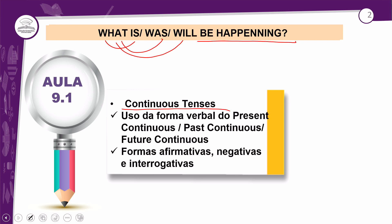Ou seja: what is happening — o que está acontecendo; what was happening — o que estava acontecendo; what will be happening — o que estará acontecendo. Perguntas com todos os verbos to be: tanto no presente, quanto no passado e quanto no futuro.